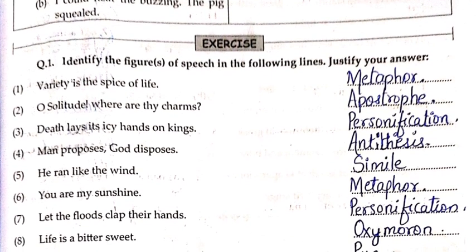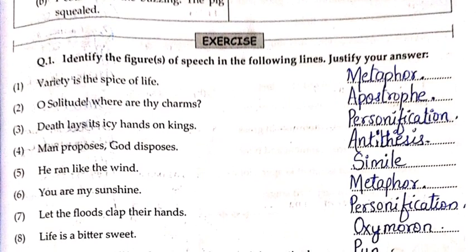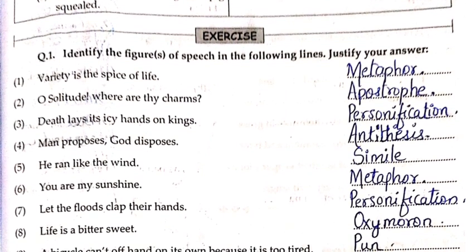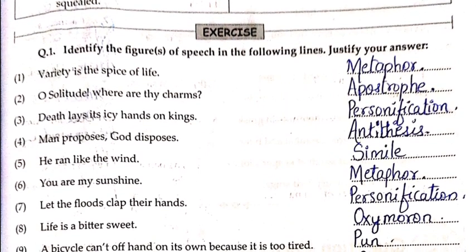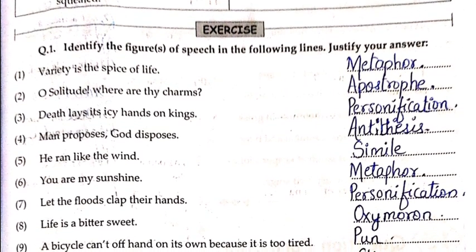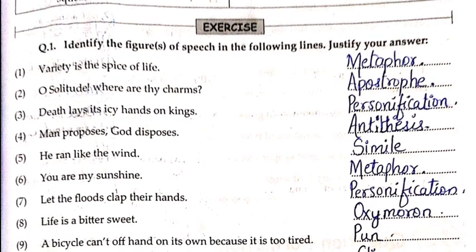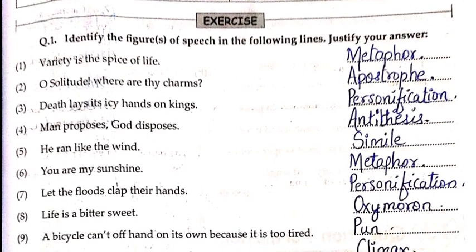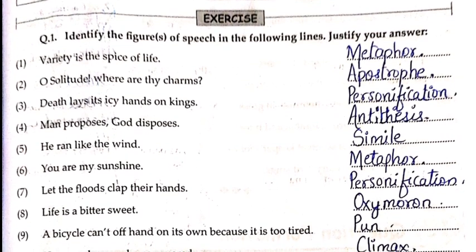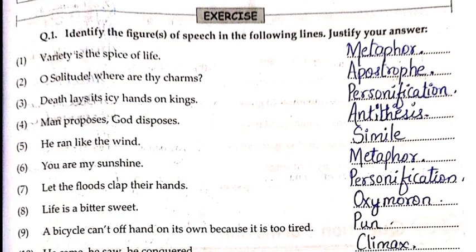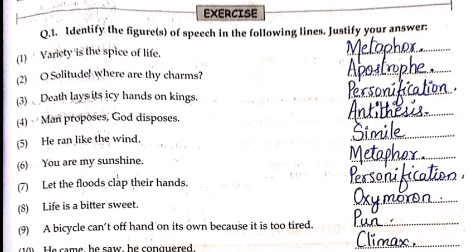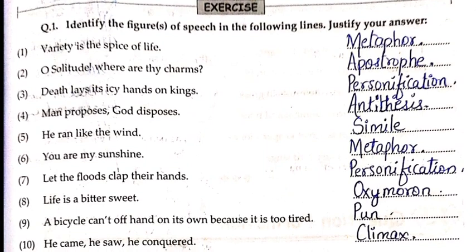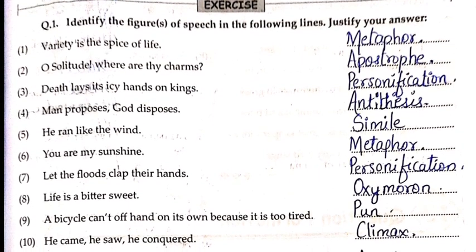Now let us solve the exercise: Identify the figures of speech in the following lines and justify your answer. First: 'Variety is the spice of life' — Metaphor. Second: 'O solitude, where are thy charms?' — Apostrophe. Third: 'Death lays its icy hands on kings' — Personification. Fourth: 'Man proposes, God disposes' — Antithesis. Fifth: 'He ran like the wind' — Simile. Sixth: 'You are my sunshine' — Metaphor.